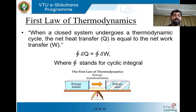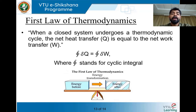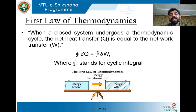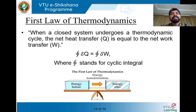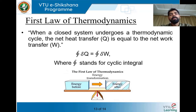The first law of thermodynamics is a form of the principle of conservation of energy. In a thermodynamic process, energy is subjected to the principle of conservation of energy: energy can neither be created nor destroyed, but can only be converted from one form to another form. Heat and work are basically interconvertible — if heat decreases it gives rise to work, and if work decreases it gives rise to heat.